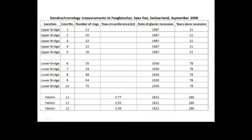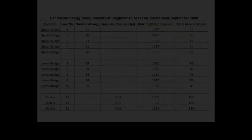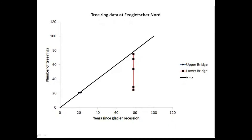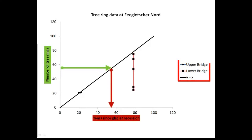One way to present your data is in a table. This table shows the findings of an investigation into glacial retreat. It's important to have a column describing the location followed by the core number. Here you can see that the number of tree rings shows the age at which the trees colonised, and we can therefore infer the number of years since recession. Another way to present your findings is by using a graph. This graph plots the number of tree rings by the years since glacial recession at given locations.